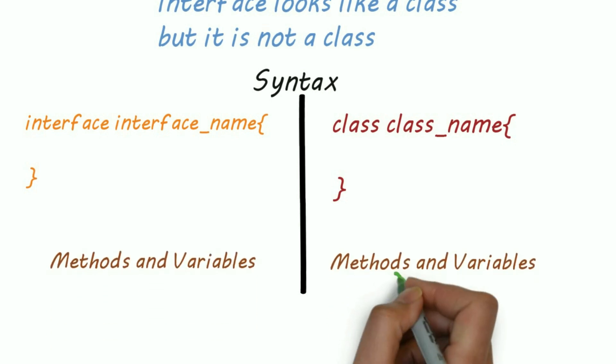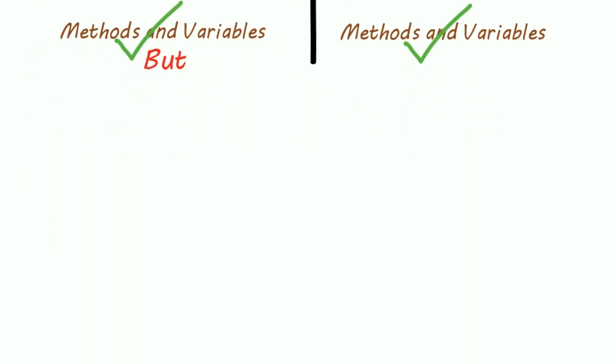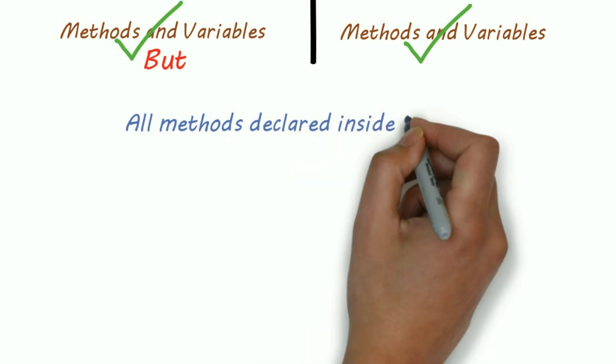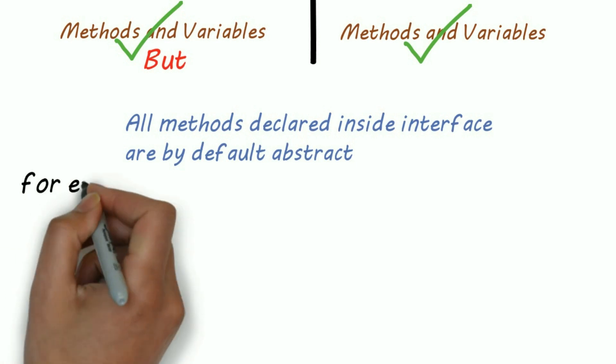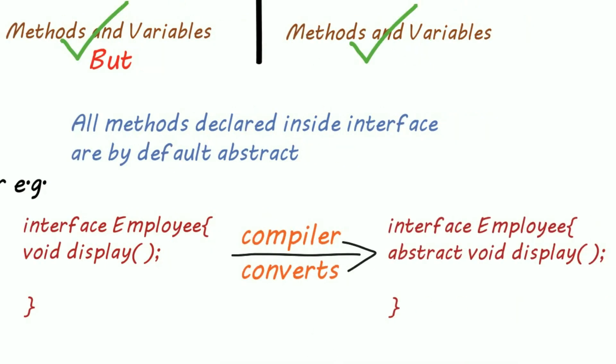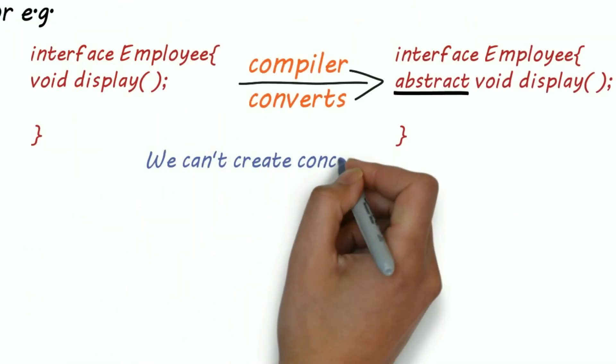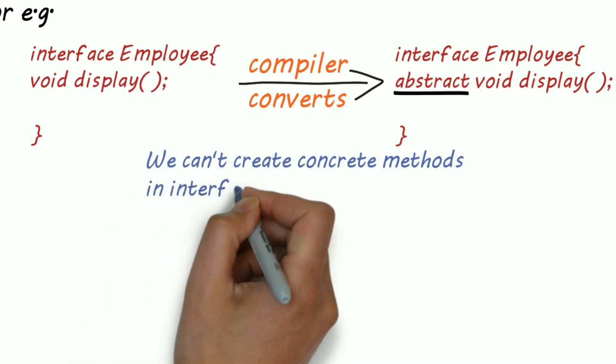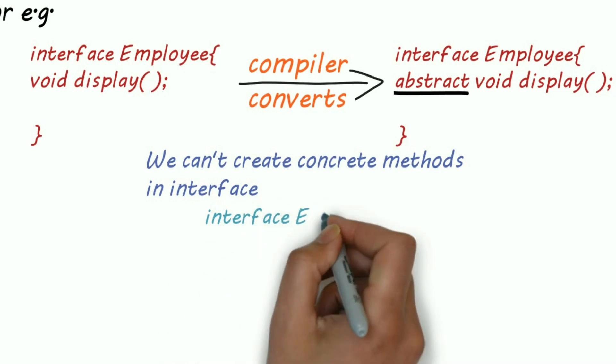Interface can have methods and variables similar to class, but all the methods declared in interface are by default abstract. Suppose I created an interface as Employee with a method display. So the compiler automatically adds the abstract keyword in front of display method. And remember that we can't create concrete method, that is our regular method, inside interface. We can only create abstract methods.